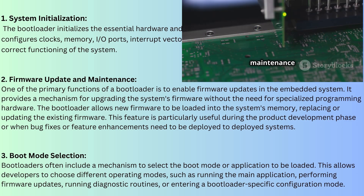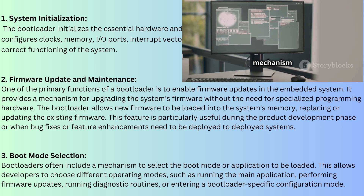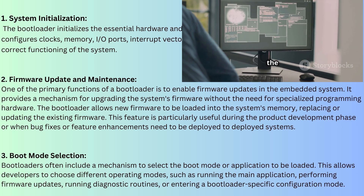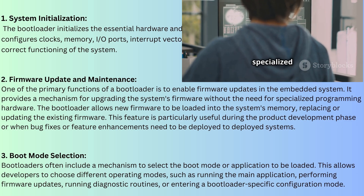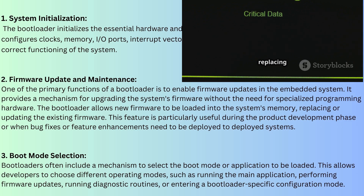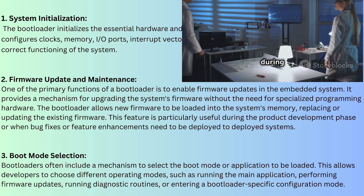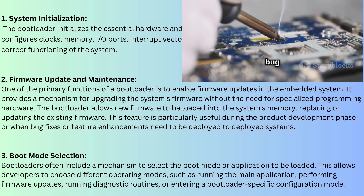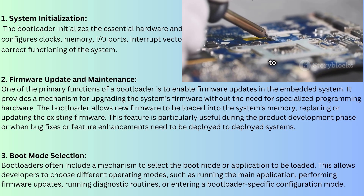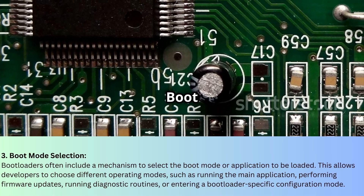Firmware update and maintenance is one of the primary functions of a bootloader. It provides a mechanism for upgrading the system's firmware without the need for specialized programming hardware. The bootloader allows new firmware to be loaded into the system's memory, replacing or updating the existing firmware. This feature is particularly useful during the product development phase or when bug fixes or feature enhancements need to be deployed to deployed systems.